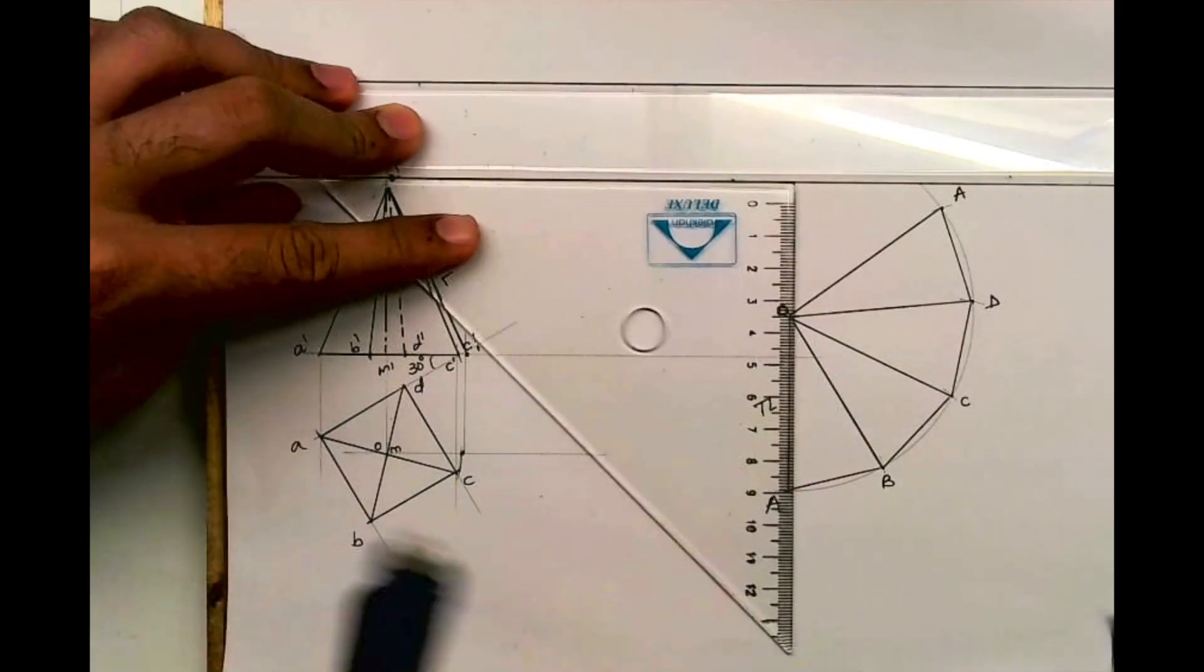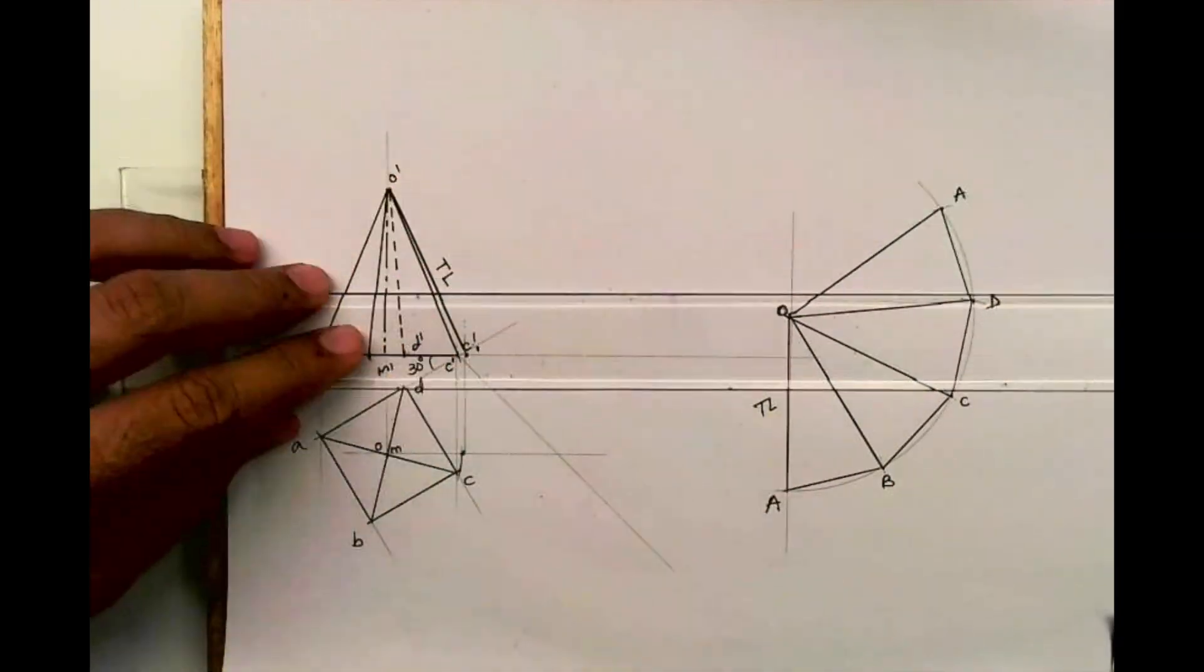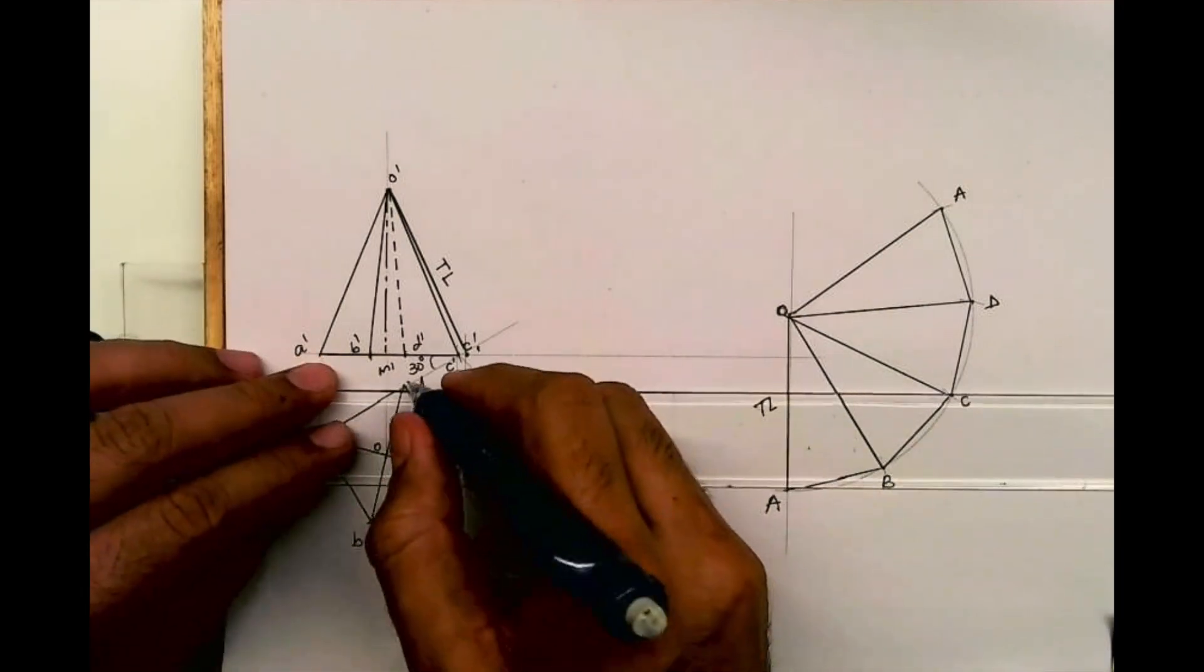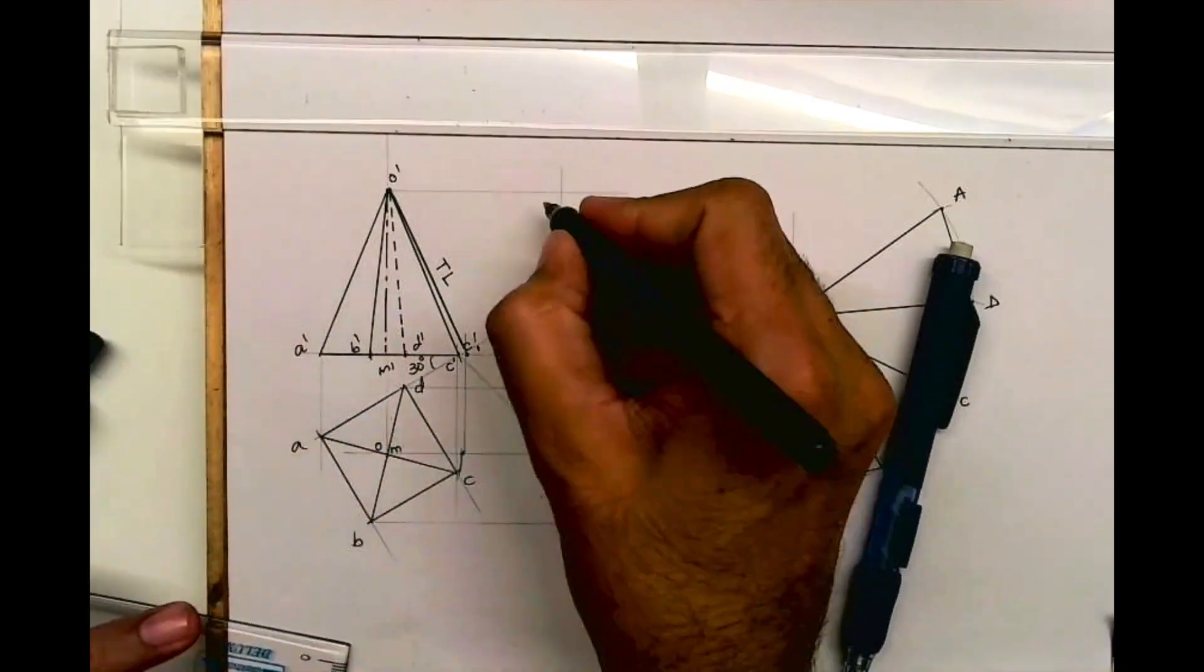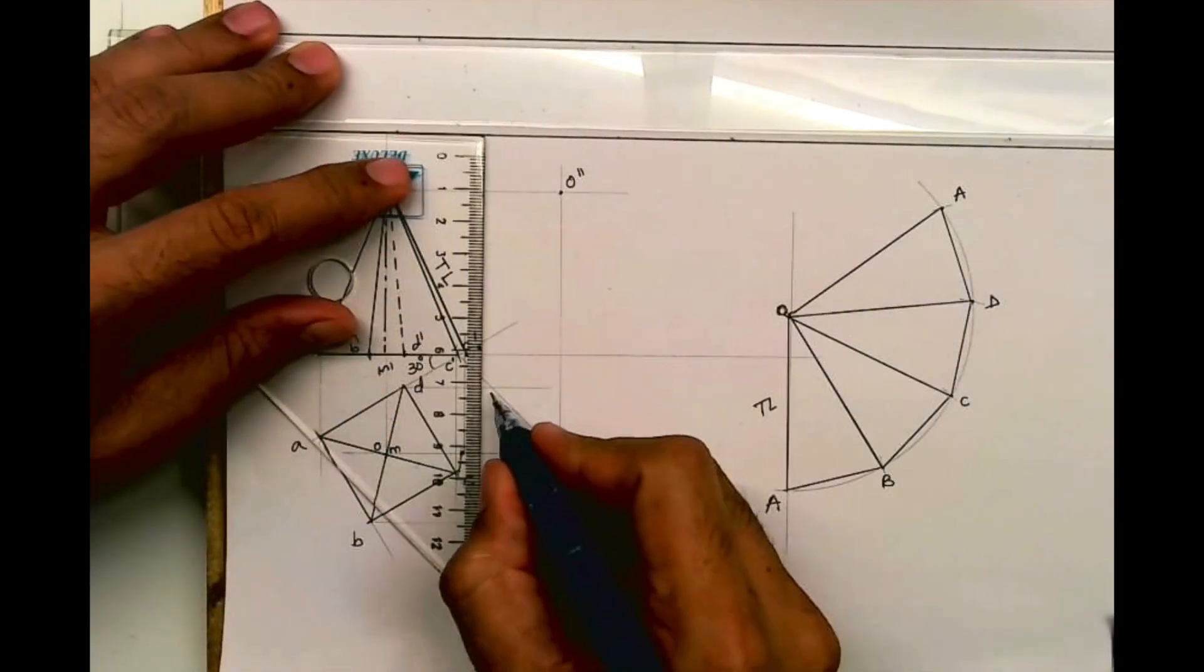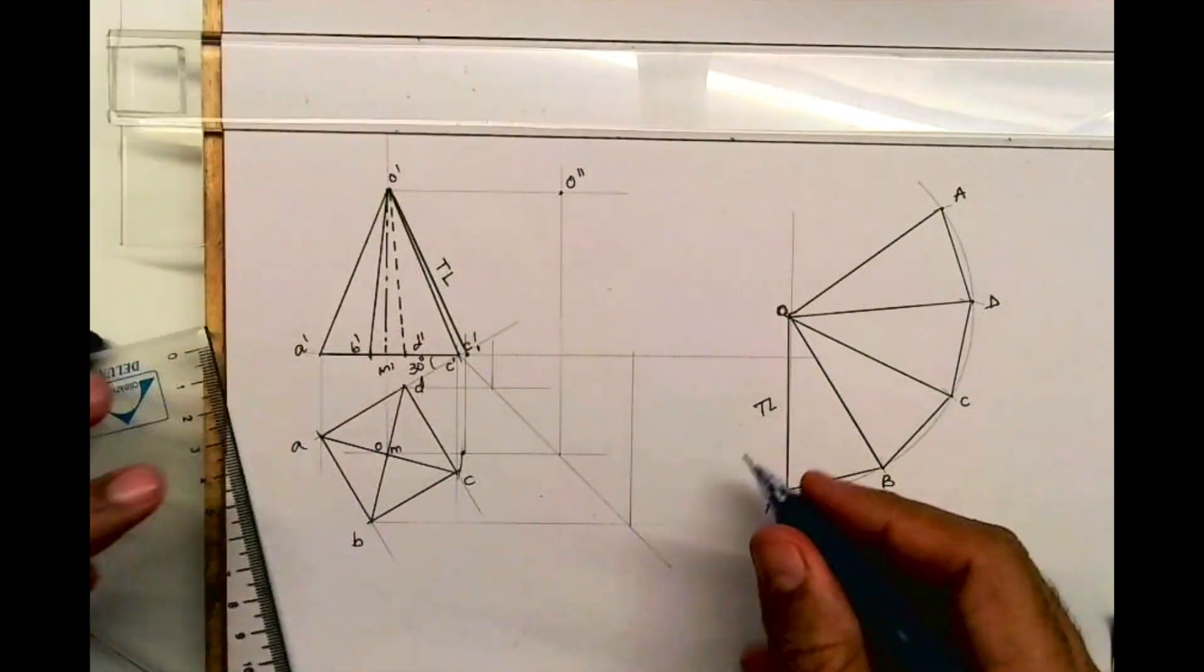Now we need to draw side view. For side we will take 45 degrees from C dash and we'll project from here. Again we'll draw axis first. This is O double dash. In side view we write double dash.